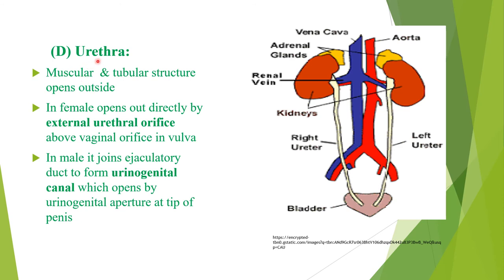The urethra is a muscular tubular structure that opens outside. In females, it opens directly by the external urethral orifice, which is present above the vaginal orifice. In males, it joins with the ejaculatory duct to form the common urinogenital canal, which opens by the urinogenital aperture at the tip of the penis. In this diagram you can see the kidneys with ureters opening into the bladder and then the urethra.